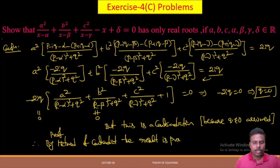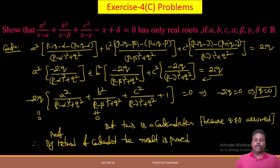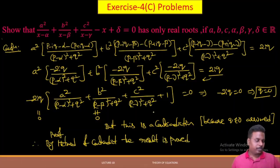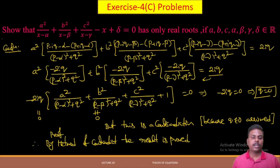Therefore by proof by contradiction the result is proved: the equation has no complex roots and must have only real roots.